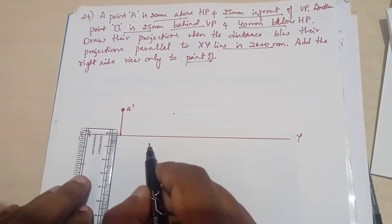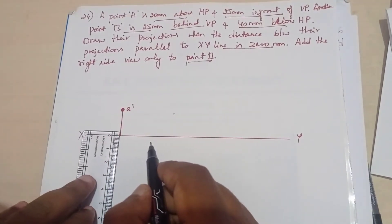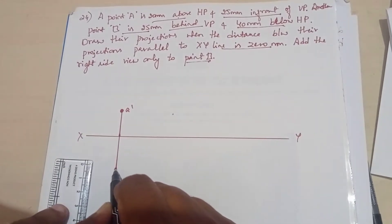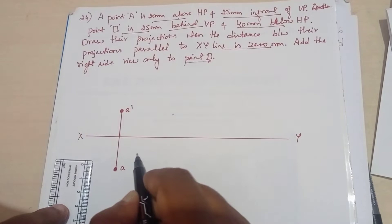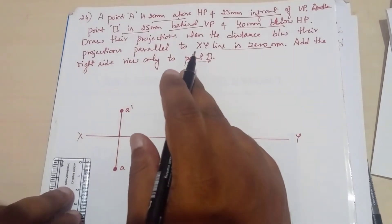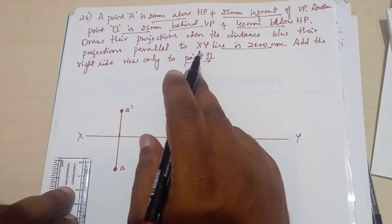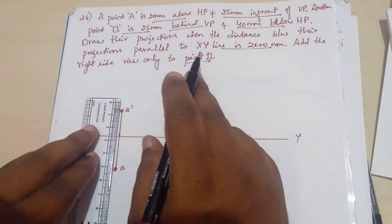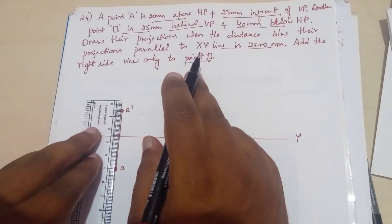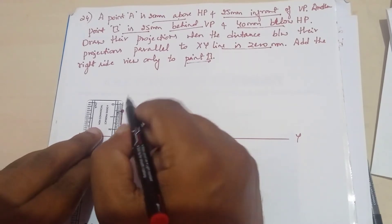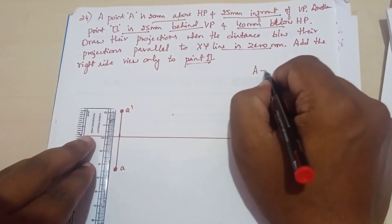25 mm in front of VP means it is the top view, okay. Next, another point B, 25 mm behind of VP - behind of VP means it is the top view. So top view, 25 mm we should draw here. It is lying in the third quadrant.